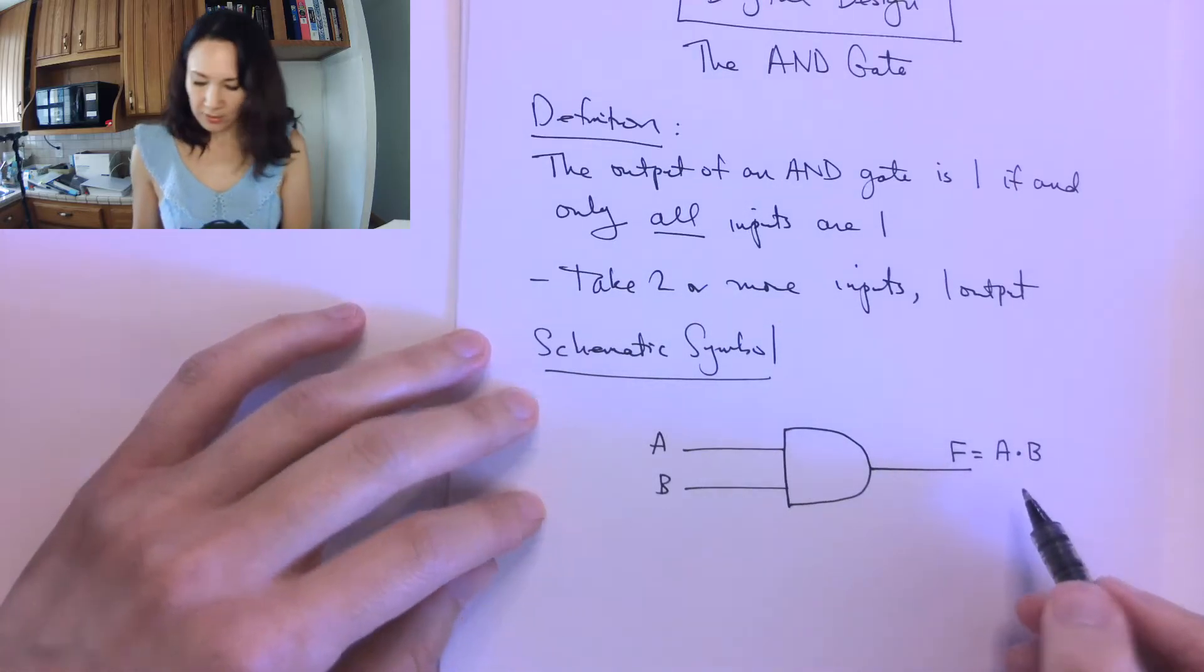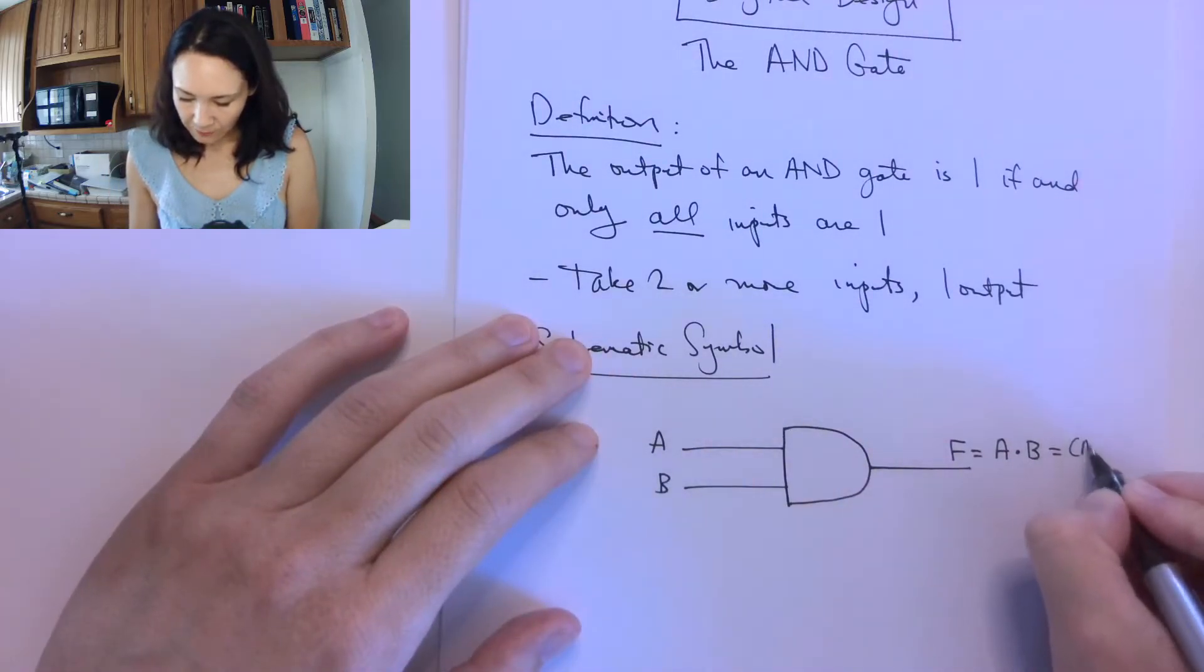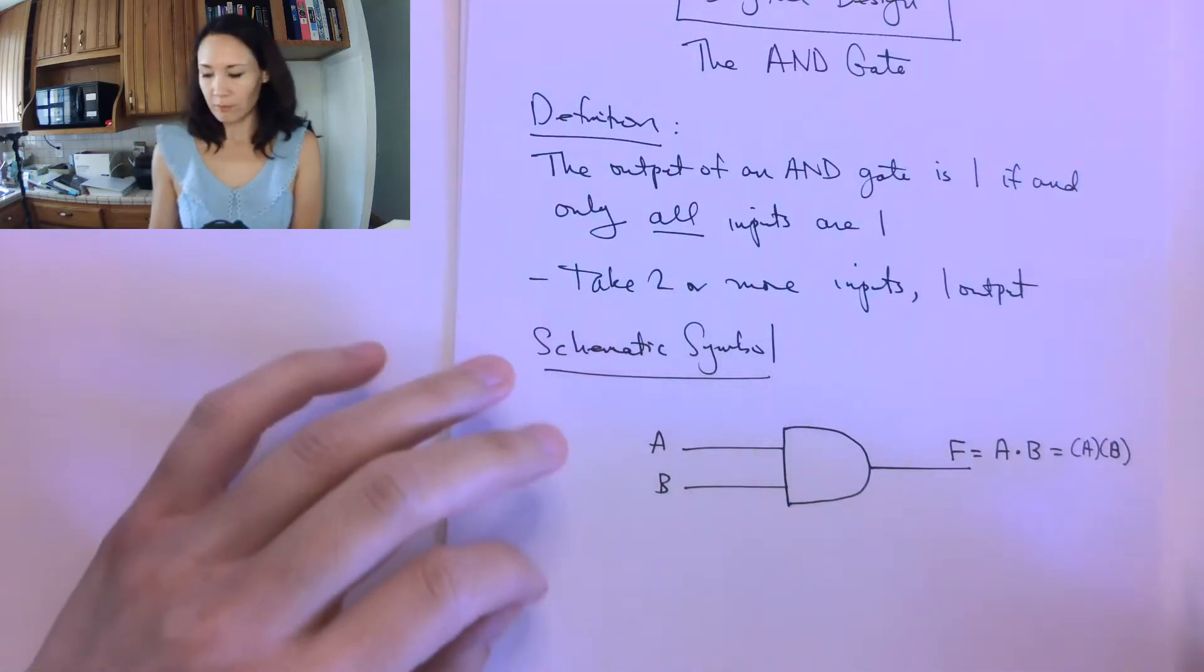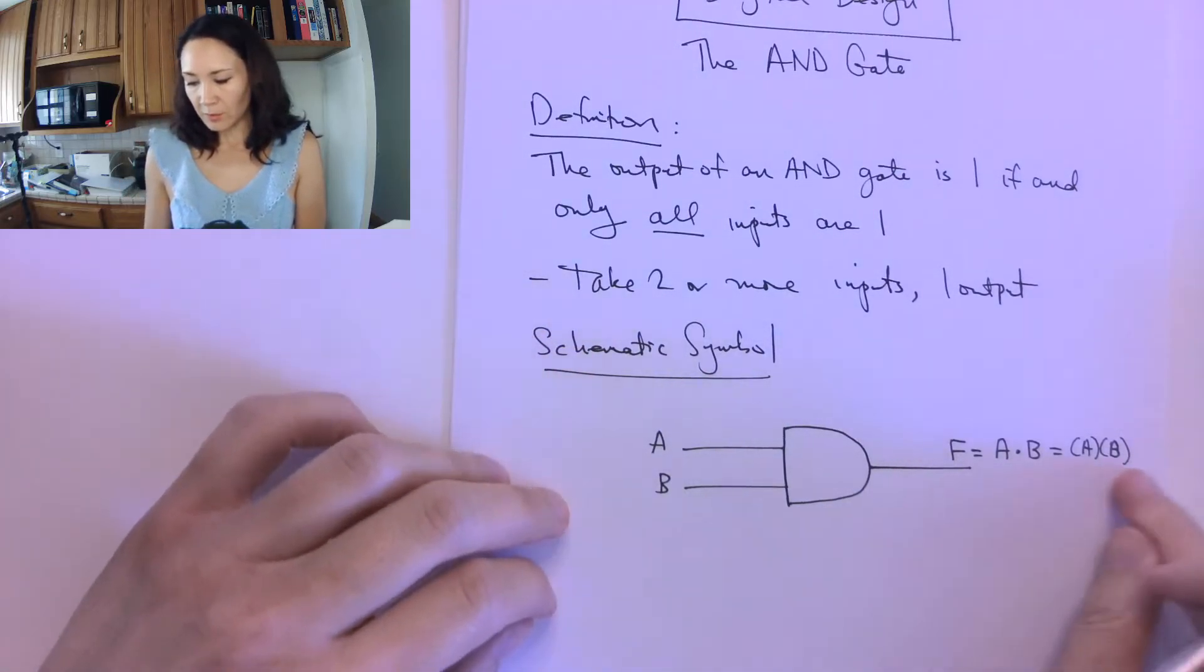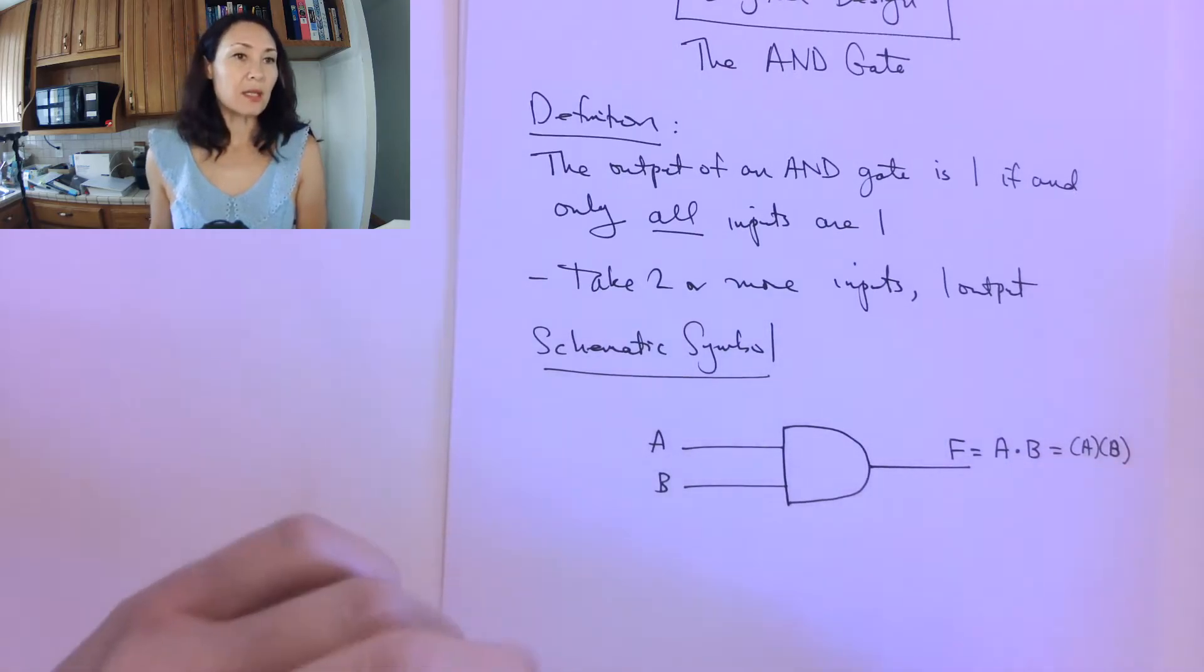but it's read A and B. ANDing is represented by the multiplication sign. So you might see this as A and B. Any kind of symbolic symbols like this that represent multiplication, you might see these interchangeably.